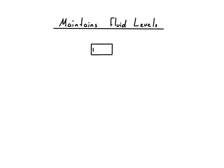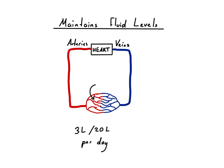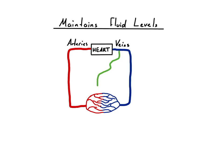As we have seen in the circulatory system, the exchange of nutrients and waste occurs at the capillary beds. For the most part, the plasma that is pushed out is collected again through osmotic pressure. But about three liters per day out of 20 liters that are pushed out remain in the interstitial space. This is where the lymphatic system comes in — those remaining three liters are picked up by lymphatic capillaries that are intertwined with the capillary bed.